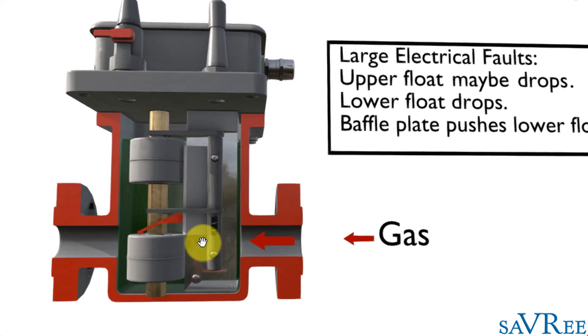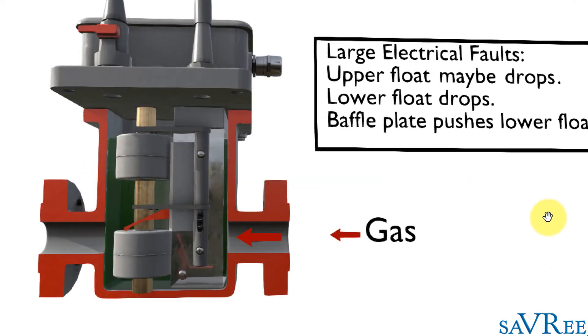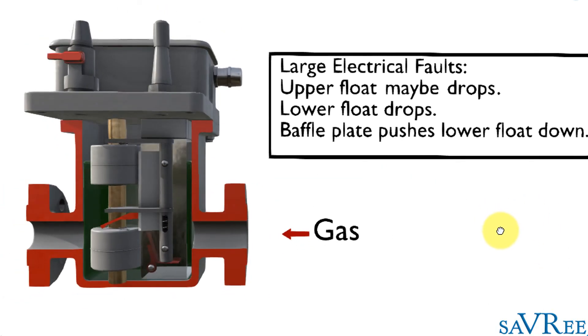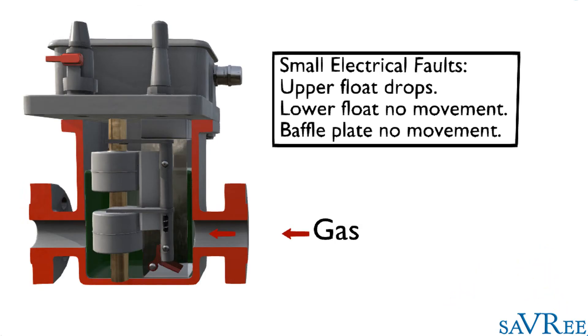However, there's other faults that we can also detect using the Buchholz relay. We're going to use different combinations of floats and the baffle plate. The baffle plate itself is now no longer used. It's only there to detect large electrical faults and to push the lower float down. So now we're going to use the upper and lower float.